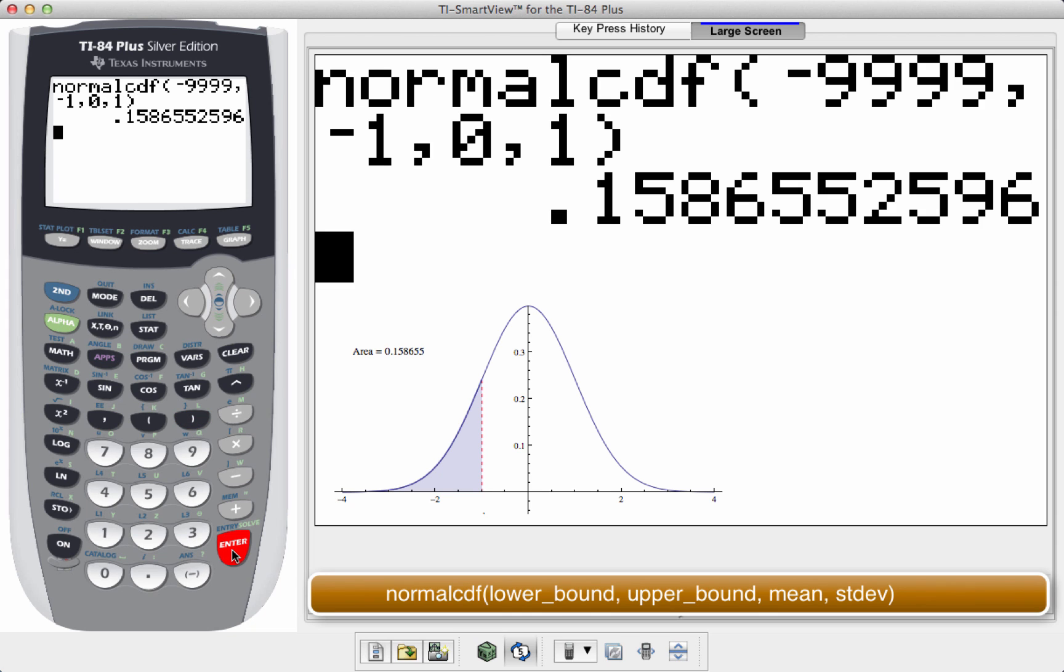And what I'm looking at here, this is the probability that my value would be less than a z-score of negative one. So that's about 15.87%.